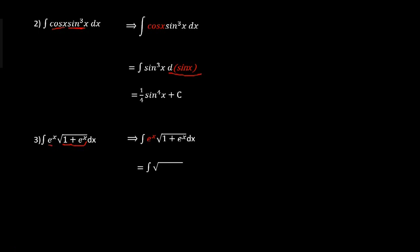So (1 + eˣ) to the square root means all of this to the power half, and we are integrating with respect to (1 + eˣ). Adding 1 to the power half gives 3/2, and we divide by 3/2 — which means multiplying by 2/3. The answer is (2/3)(1 + eˣ)^(3/2) + k.